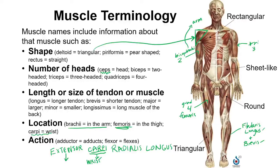Carpi relates to the carpal bones, the small bones within your wrist. Radialis is on the side of the forearm with the radius bone. In the forearm, we have the radius and the ulna, and the radius is found on the lateral side, or the thumb side. Then longus means there's likely an extensor carpi radialis brevis running with it, and this longus has a longer tendon in comparison. So now we know this muscle is in the forearm, it extends the wrist, and it's on the lateral or radial side next to the extensor carpi radialis brevis.